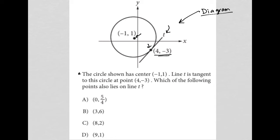How would we know what other points are on line T? Well, because it's a diagram question, we can use the diagram to at least give us some sense of what's possible. So, for instance, choice A, the point 0, 5 fourths. If this is negative 1, 1, that makes this 1 on the y-axis. 5 fourths is barely above 1, and 0, 5 fourths would be a point right here. Well, that's definitely not on line T, so A is gone.